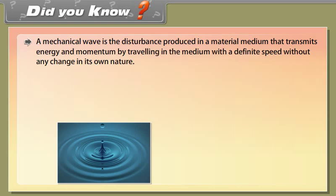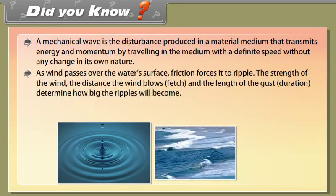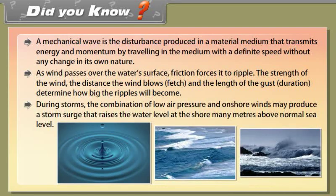Did you know? A mechanical wave is the disturbance produced in a material medium that transmits energy and momentum by travelling in the medium with a definite speed without any change in its own nature. As wind passes over the water's surface, friction forces cause ripples. The strength of the wind, the fetch (distance the wind blows), and the duration of the gust determine how big the ripples will become. During storms, the combination of low air pressure and onshore winds may produce a storm surge that raises the water level at the shore many meters above normal sea level.